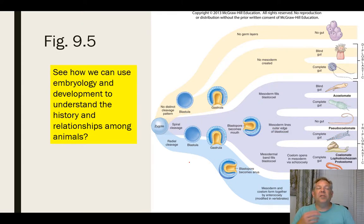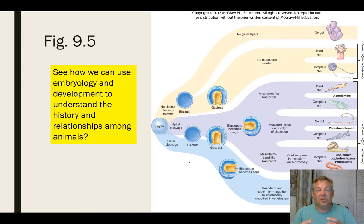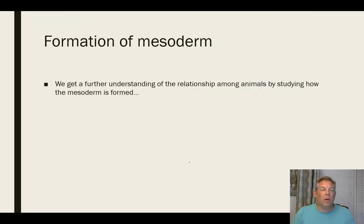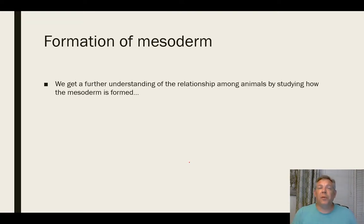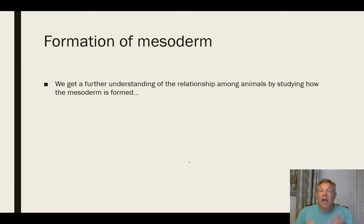This is how we use embryological development to understand the evolutionary history and the relationships between these groups. We can take this a step further and look in more detail at how that mesoderm is formed in the triploblasts, which gives us a deeper understanding of relationships among these animal phyla.